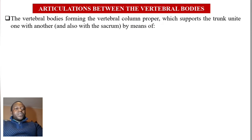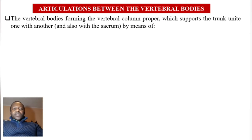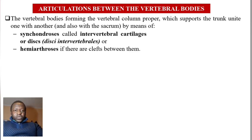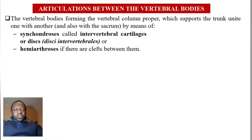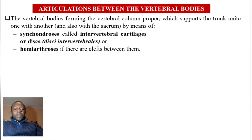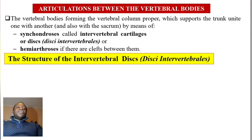The vertebral bodies forming the vertebral column proper, which support the trunk, unite one with another and also with the sacrum by means of syncontrosis — through intervertebral cartilages or intervertebral discs, ligamentum longitudinale, and also hemiarthrosis if there is a cleft between them.